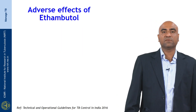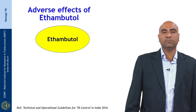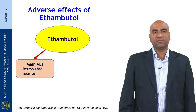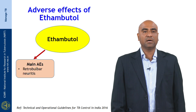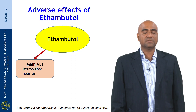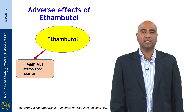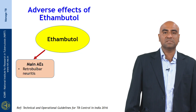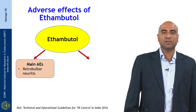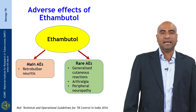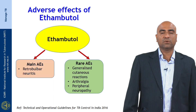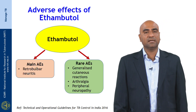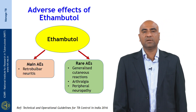Coming to the adverse effects of ethambutol: the main adverse effect is retrobulbar neuritis. That is why it is always imperative that we monitor the vision of the patient when they are on tuberculosis treatment. Rare adverse effects include generalized cutaneous eruptions, arthralgia, and peripheral neuropathy.